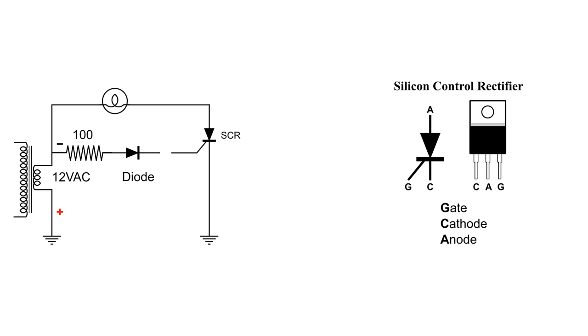So to get the other half of that circuit, I added a little more to this diagram. Another 100 ohm resistor, another diode and another SCR.